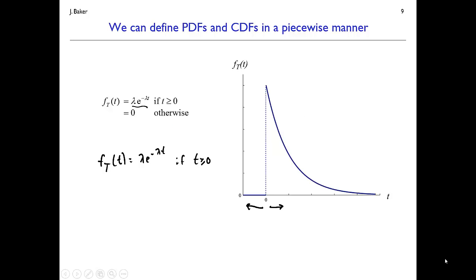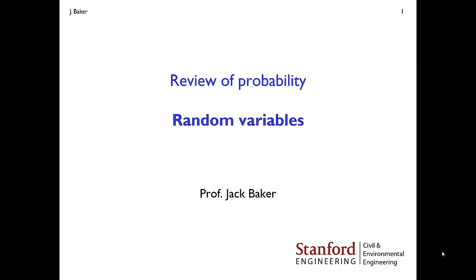Now let's discuss random variables. If you're working through these videos in order, you've previously seen extra slides on continuous random variables, PDFs and CDFs as a way to define those random variables — a way to treat probabilities and manipulate conditional probabilities. That approach is pretty transparent; you don't have to think too much about notation or new conventions to do those calculations. However, they're quite cumbersome when looking at engineering problems. Random variables are a much more appropriate way to handle a lot of engineering problems.